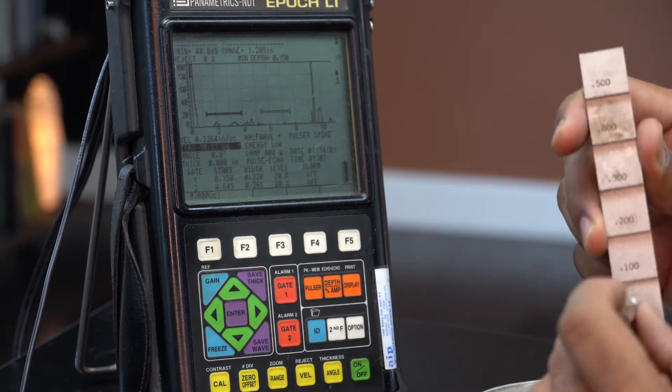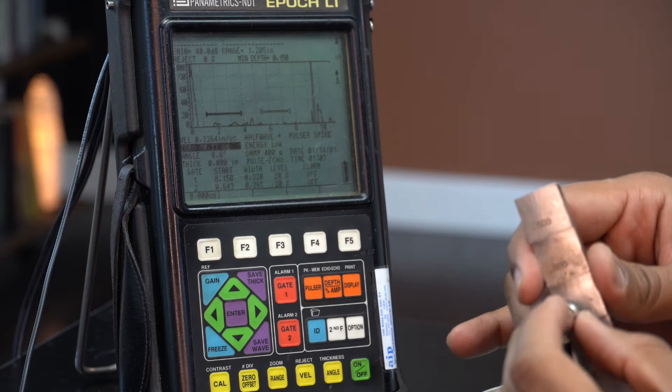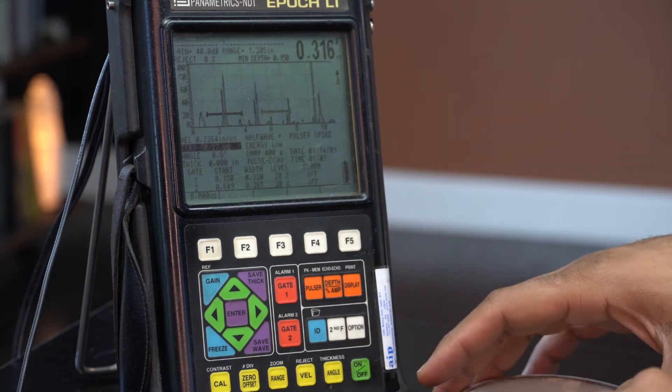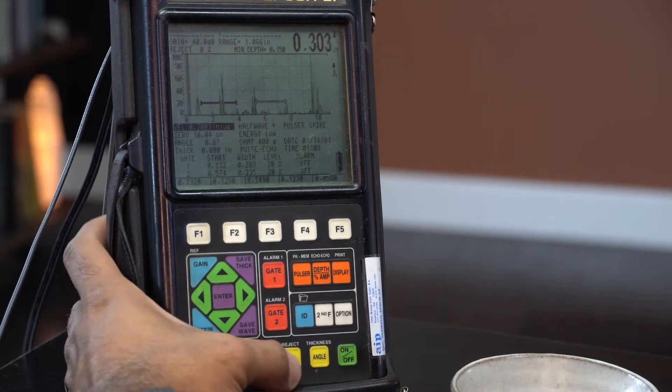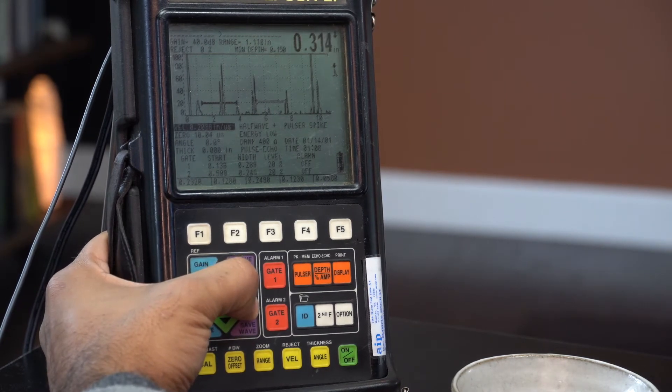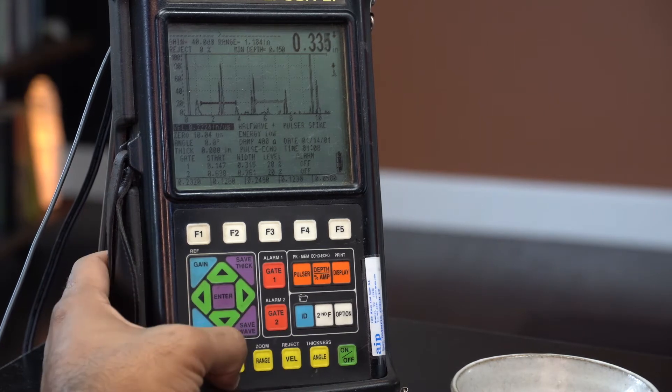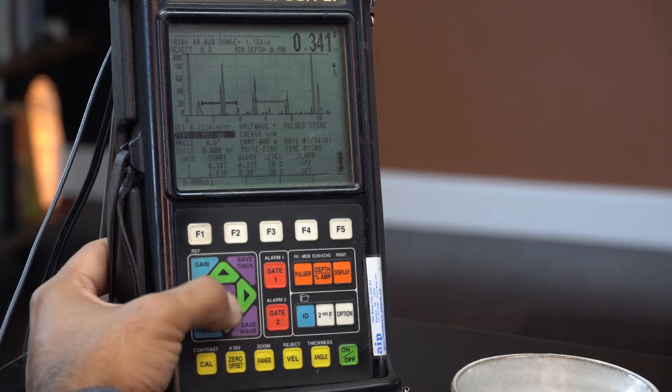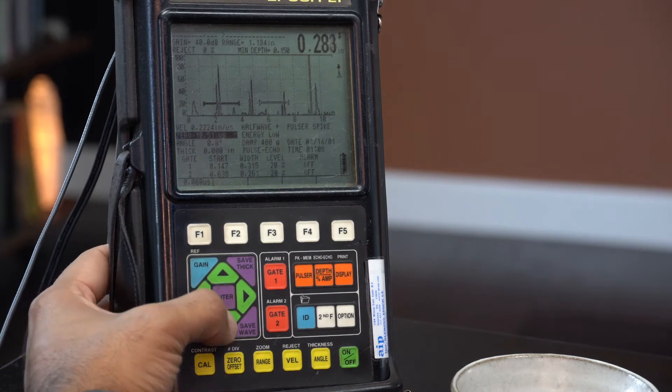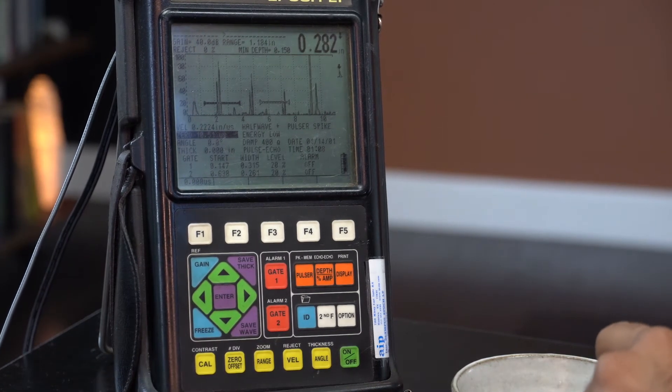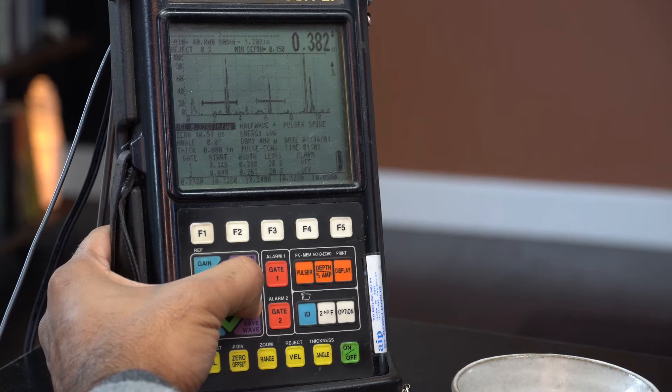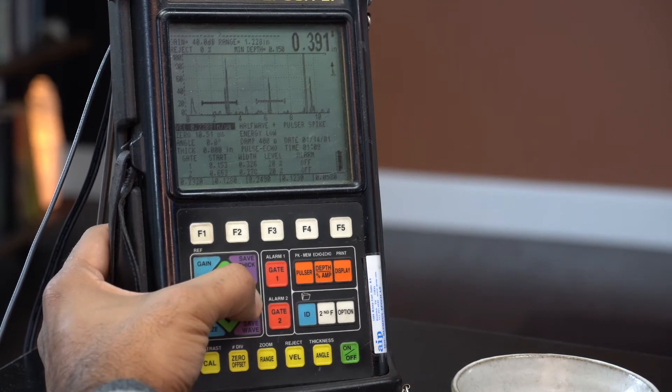This is supposed to be point three thick. We're getting up here in the top right corner. We're getting point three sixteen. So we need to probably adjust both the velocity. Probably need to actually just move the zero. I'm pretty sure that the velocity for this steel is not going to be two thousand inches per microsecond. It's going to be more like twenty three hundred. So I'll just keep bringing the actual zero down. All right now I'm going to increase the velocity until we get probably close to about twenty three hundred.